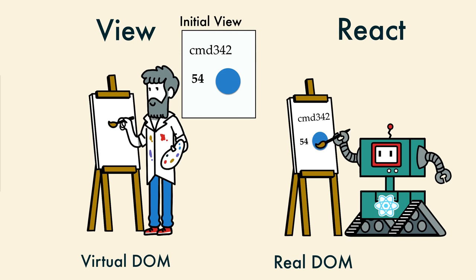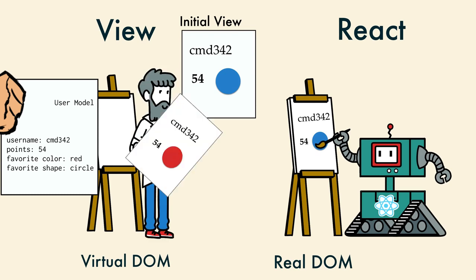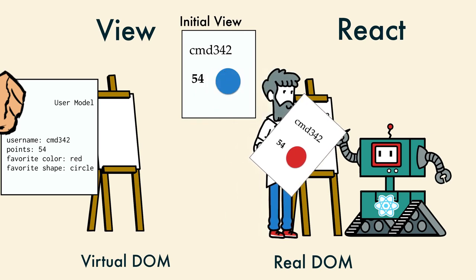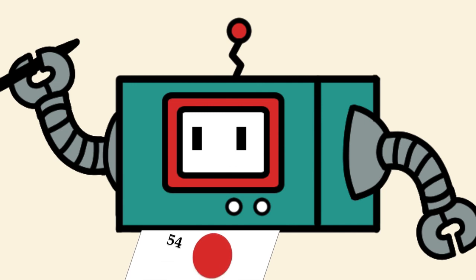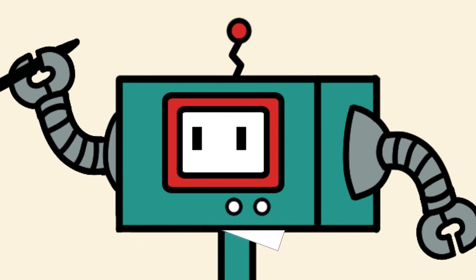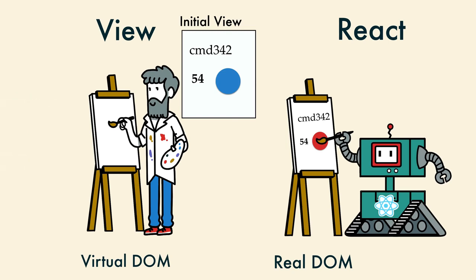It could paint very fast, because it was a robot. Then, whenever the data may have changed, the model gave the view all the data again. The view liked this because he was really good at sketching an entire picture, but not very good at remembering all of those DOM nodes. When it was done, he gave it to React, who scanned it. Difference detected — blue circle is now red. It quickly made a short list of all of the differences, then it painted each and every difference, but no more.